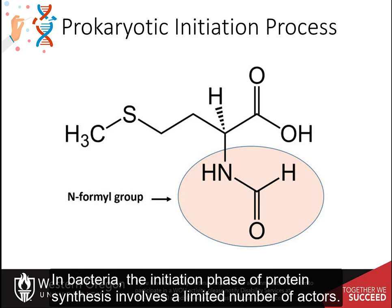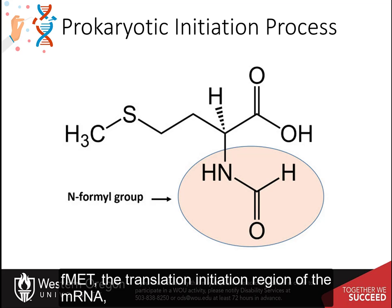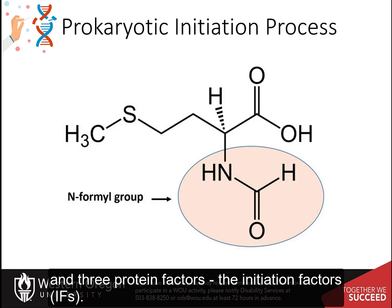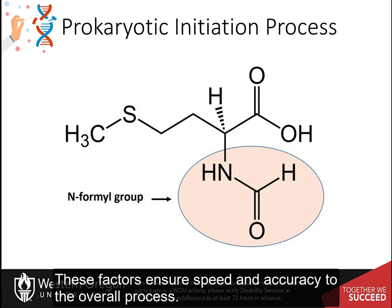In bacteria, the initiation phase of protein synthesis involves a limited number of actors. Aside from the two ribosomal subunits, key roles are played by the initiator tRNA called fMet, the translation initiation region of the messenger RNA, and three protein factors — the initiation factors, IFs — which include IF1, IF2, and IF3. These factors ensure speed and accuracy to the overall process.